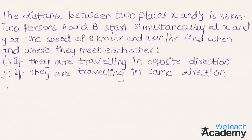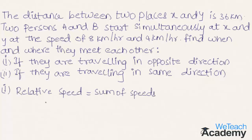For opposite direction: the relative speed when two objects move in opposite directions is the sum of their speeds. The speeds of A and B are 8 kilometers per hour and 4 kilometers per hour, so adding them gives a relative speed of 12 kilometers per hour.